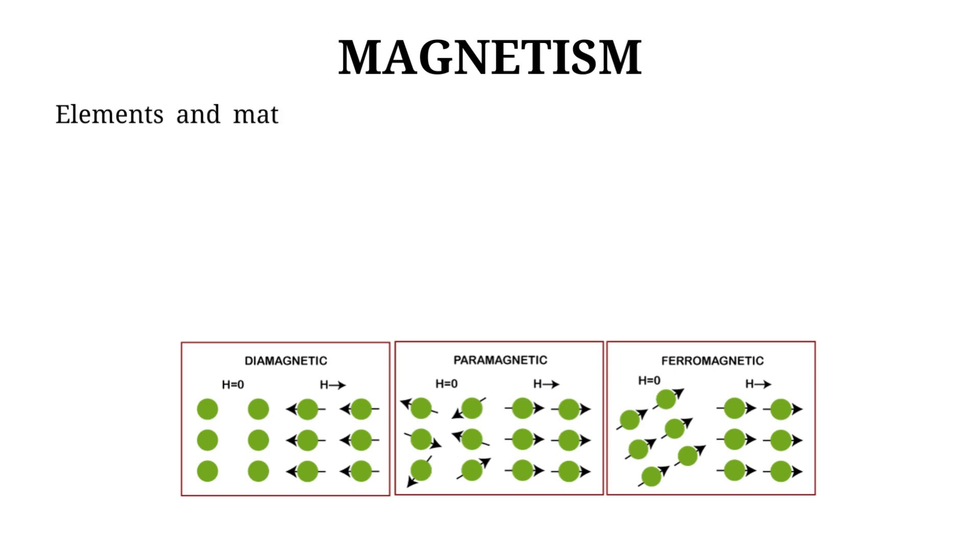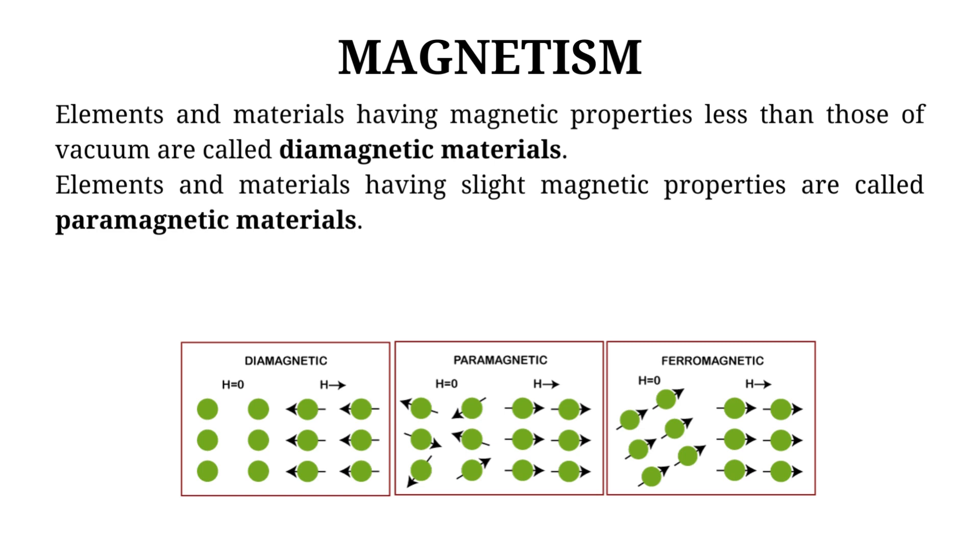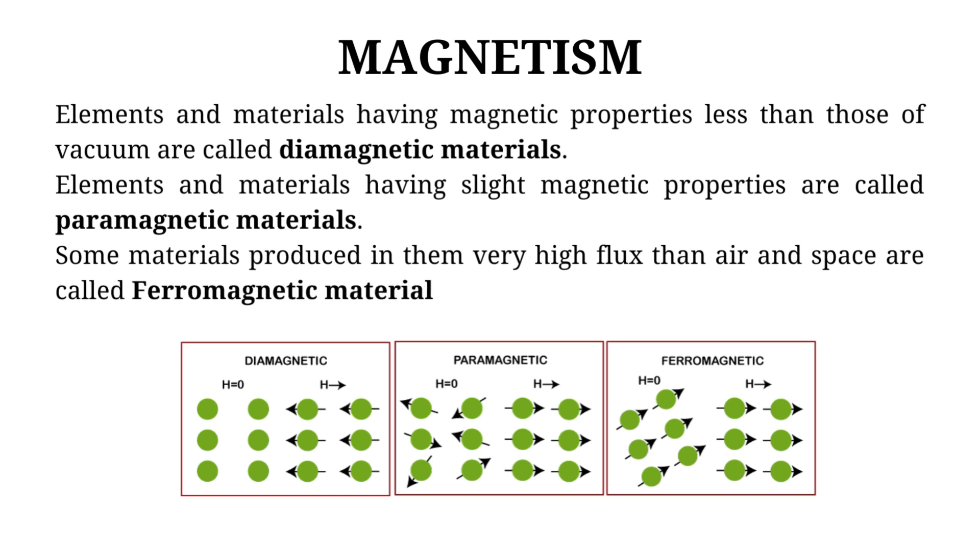Elements and materials having magnetic properties less than those of vacuum are called diamagnetic materials. Elements and materials having slight magnetic properties are called paramagnetic materials. Some materials produced in them very high flux than air and space are called ferromagnetic materials.